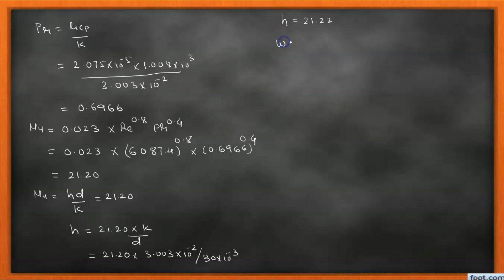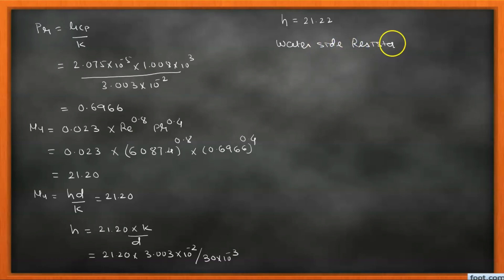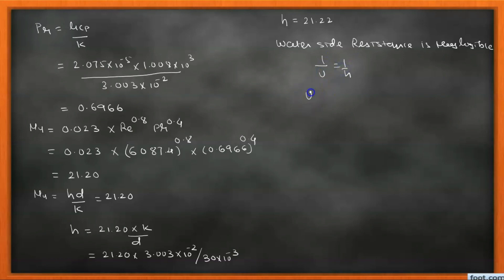Since the water side resistance is negligible, 1/U = 1/h, and therefore U = h = 21.22 W/m²·K.